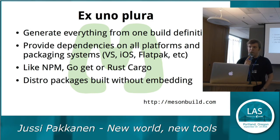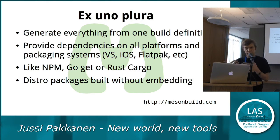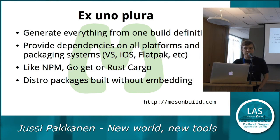This is not a very new invention — it's basically what NPM, Go get, and Rust Cargo do. The difference is that Go and Rust were designed from the ground up to make this possible, and it's very easy to do on those languages. This has traditionally been difficult to do if you have C and C++ code. If you put things in the distro because distro packages are great and you really want to use them as much as possible, all of these can be built to use only distro dependencies. You want one build definition, and then you can get everything else out of that.